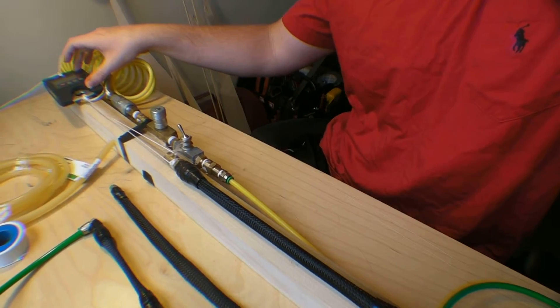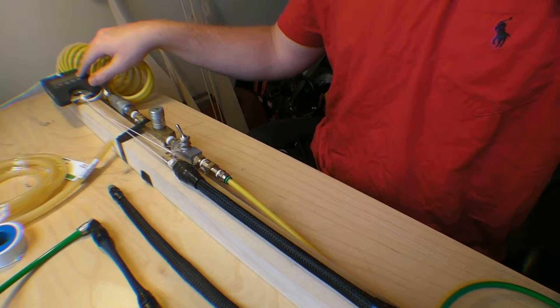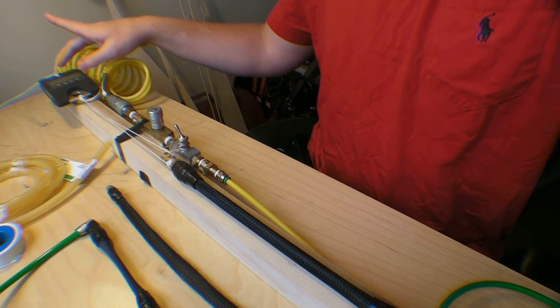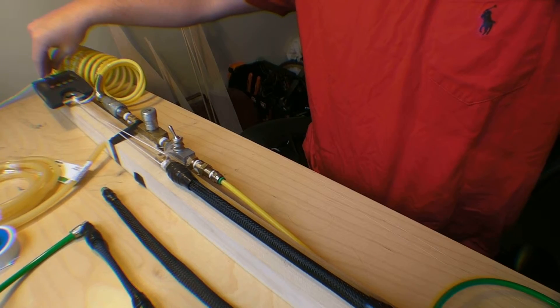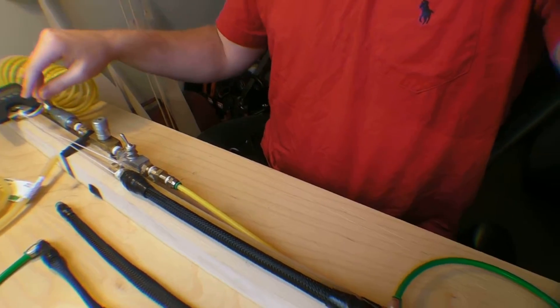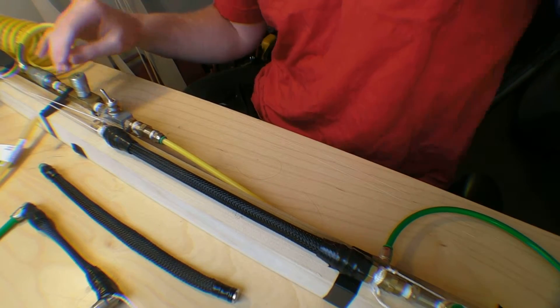And on the other end, this is a crane scale. This does all the units I need: pounds, kilograms, and Newtons. So I can switch between it, it tares, you can hold it, and then that's attached to another screw at the end. The tripod's making some weird squeaky noise, I apologize for that.